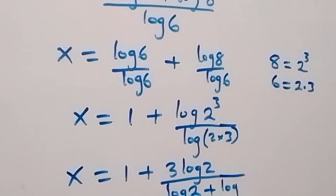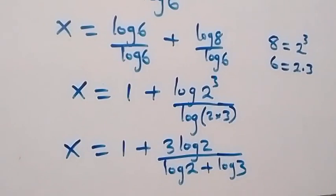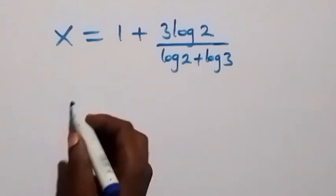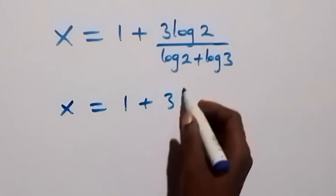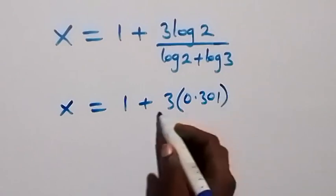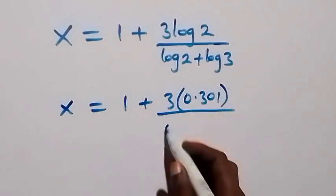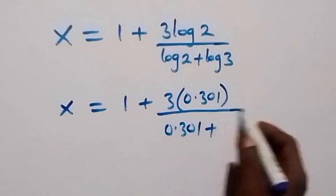Then we can substitute the values of log 2 and log 3. So x equals 1 plus 3 times 0.301 over 0.301 plus 0.4771.